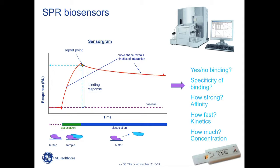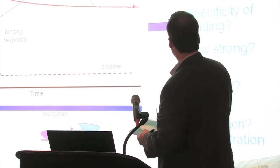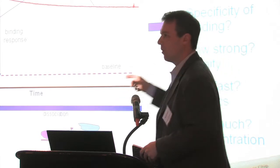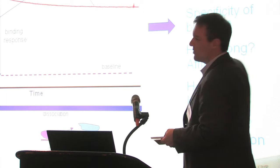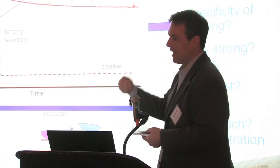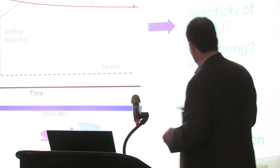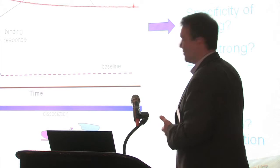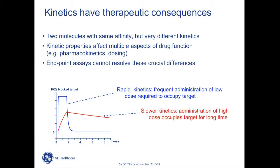From the sensorgram we directly obtain on and off rates and affinity, which is derived from their combination. Based on assay design and what is immobilized on subsequent flow cells — the system has four flow cells — you can also understand the specificity of binding for a particular protein or construct. The same methodology is used to derive the active concentration of a molecule. When we look at affinity alone, that value is a combination of on and off rates, which could derive from very different contributions from those two factors.